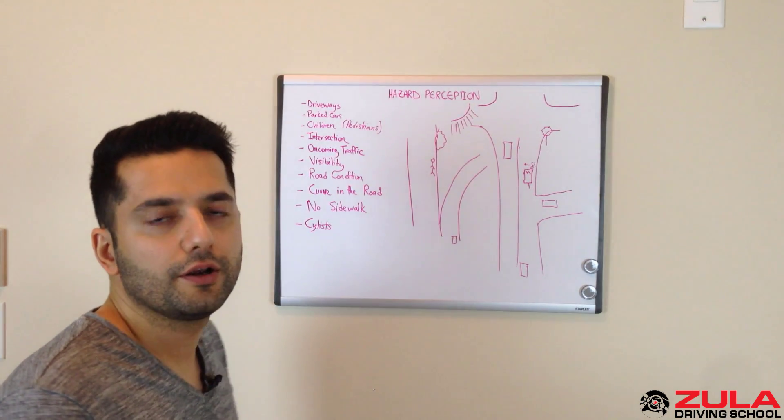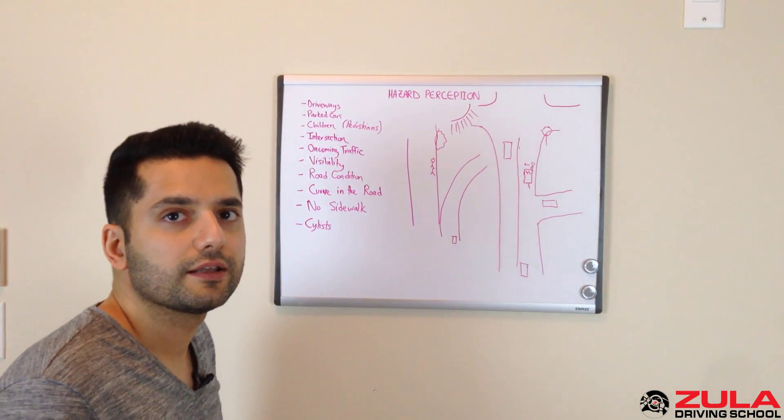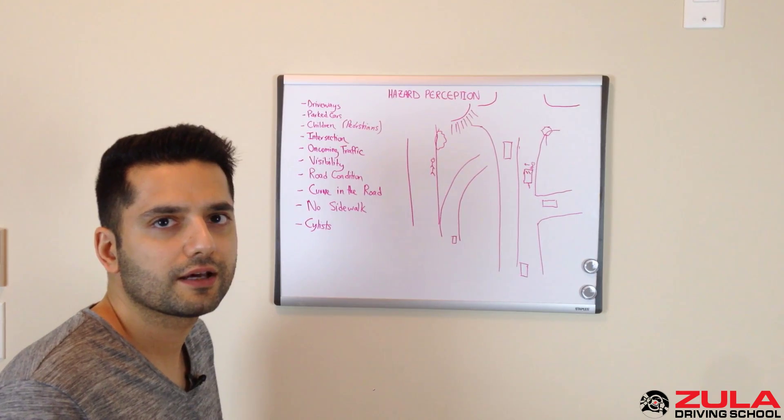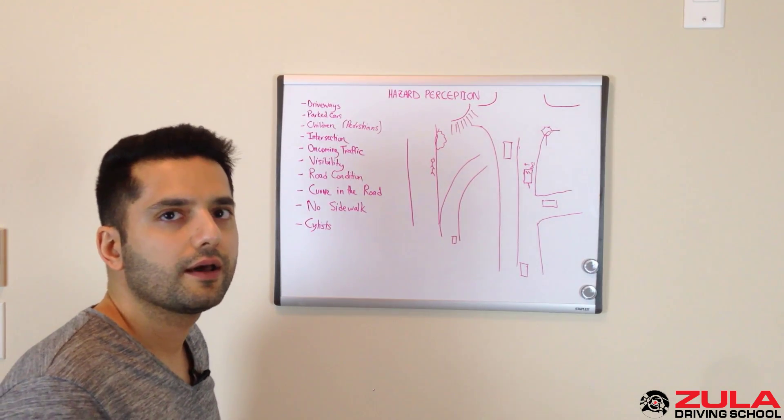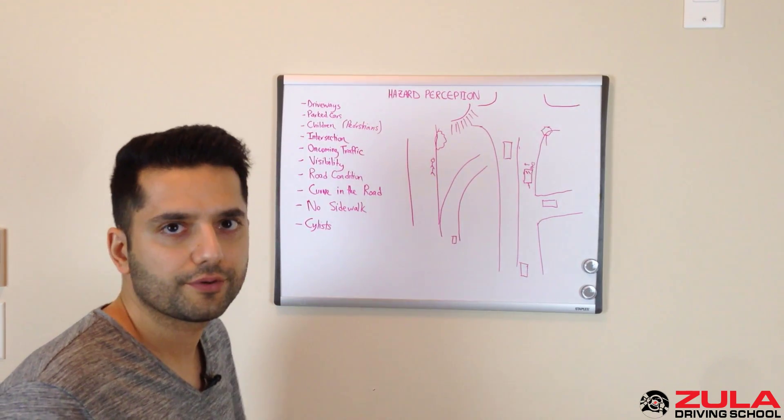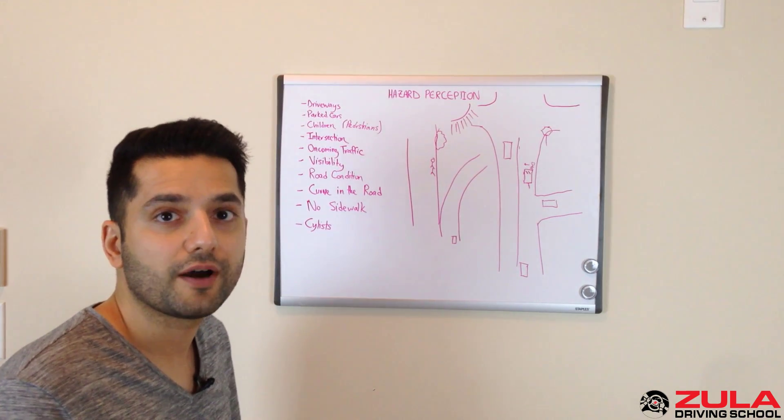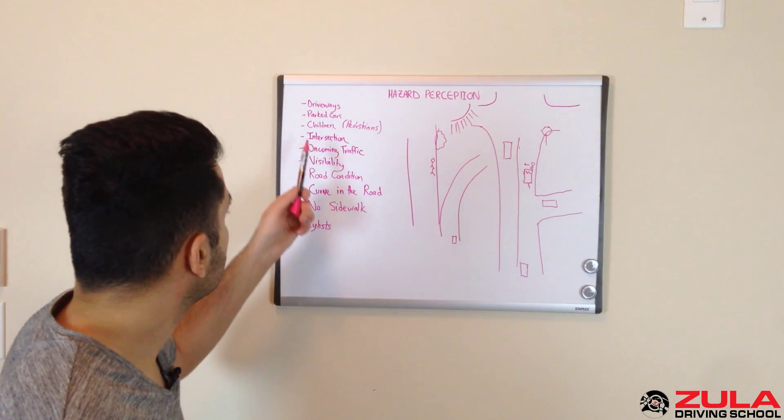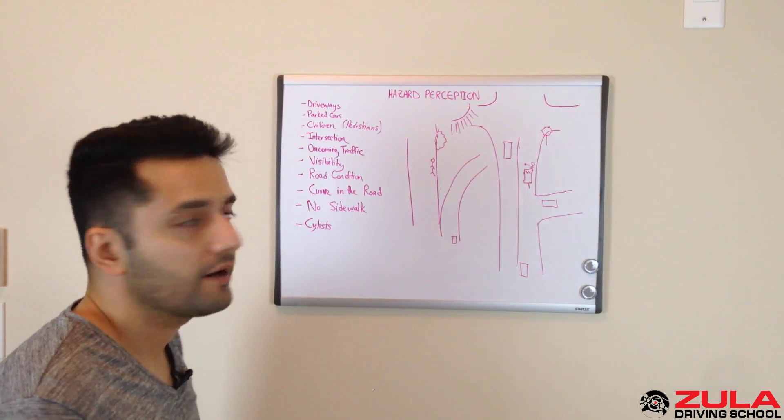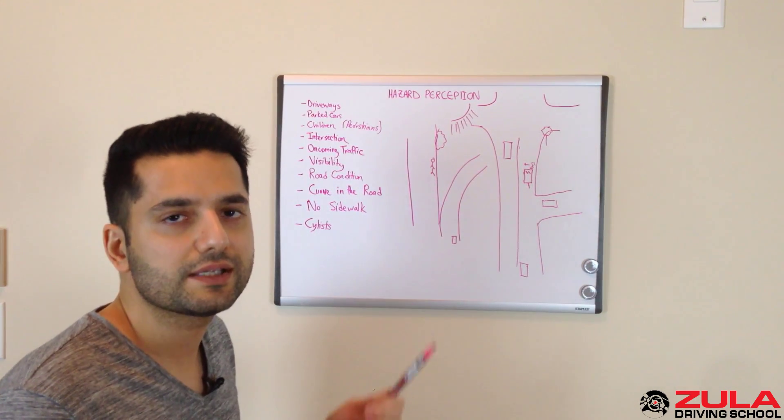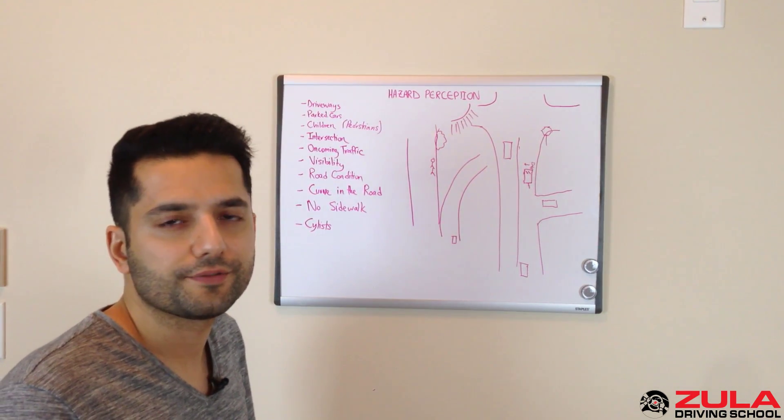When you go for your road test, if you're going for your class seven road test, like to go get your N, they will have you pull over to the side of the road at some point and ask you to name five hazards that you see. And if you give them any one of these five, as long as it's within reason, then it will suffice.